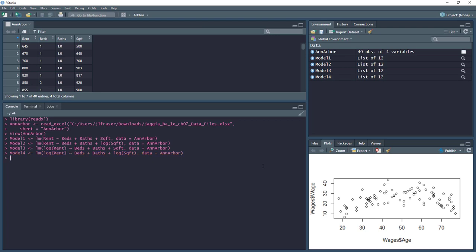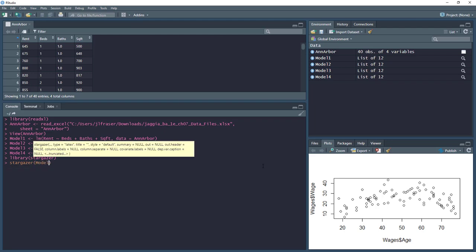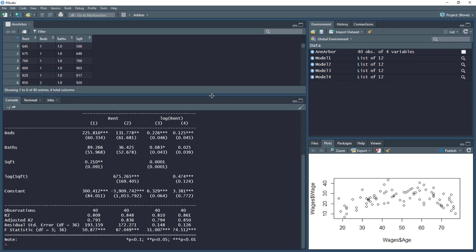So now we've generated our models and we can go ahead and use the stargazer package to take a look at these four models side by side. So if you have stargazer installed, you can just do library stargazer, and then use the stargazer function. And here we can compare our four models side by side. But we also know that we can't necessarily use r squared to evaluate those models where the dependent variable is a log as opposed to a linear value.